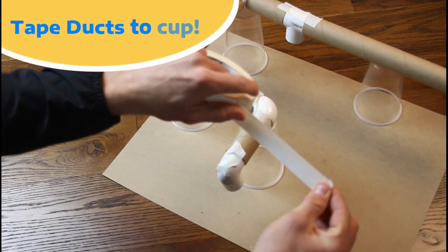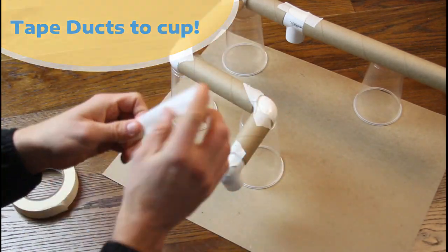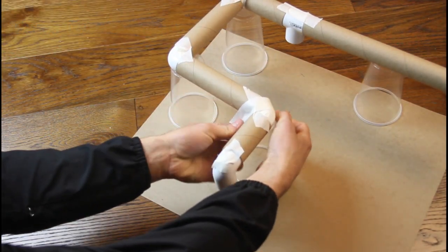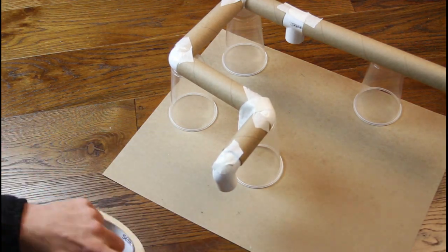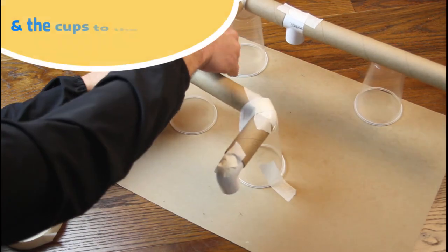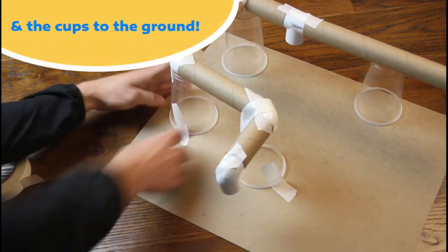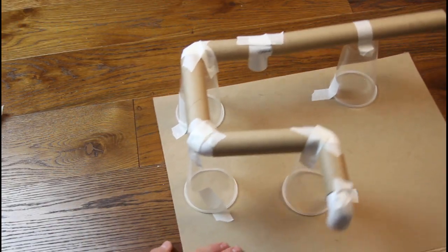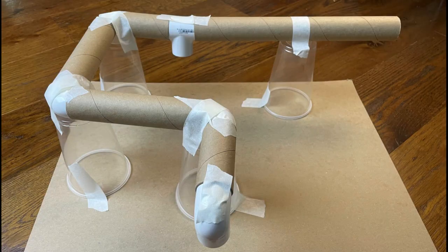When that all feels nice and sturdy we'd ask that you get the tape back out and now tape the system whether it's on the tubes or the PVC connections to the cups and also the cups to the floor. We like to give the whole structure a little shake just to make sure nothing's popping loose and then you're ready for the next step.